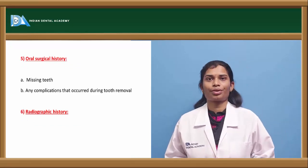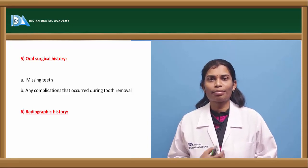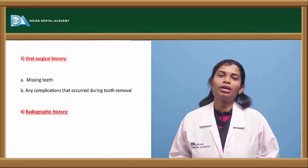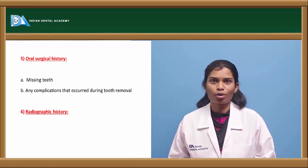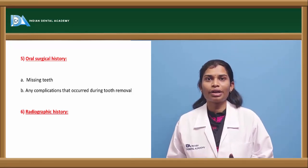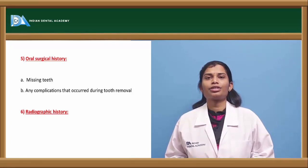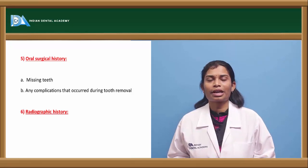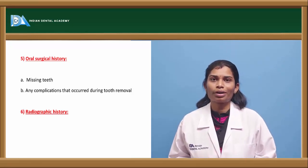Coming to oral surgical history — this includes the history of any missing teeth: why are they missing and what could be the reason? Also, any minor oral surgeries the patient has undergone will help you assess previous oral hygiene conditions. If teeth were extracted due to mobility, this can be related to previous poor periodontal history.